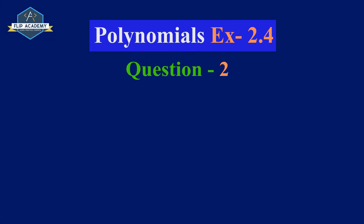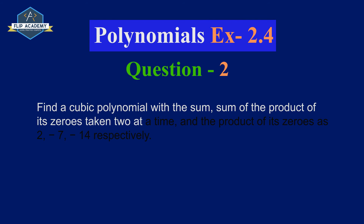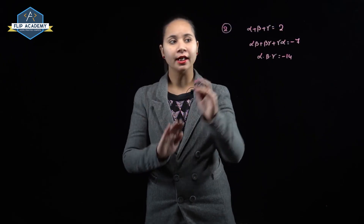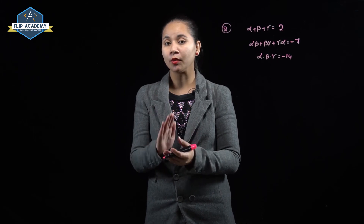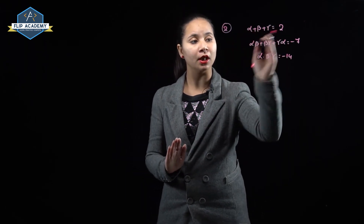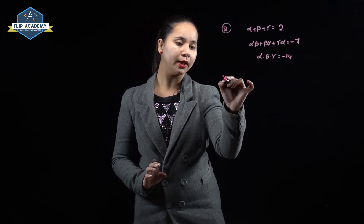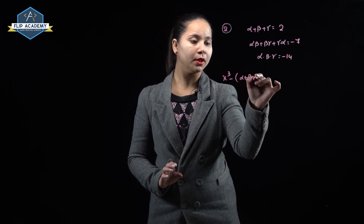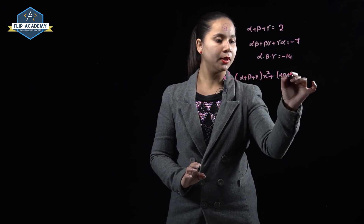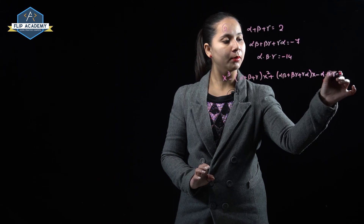Polynomials exercise 2.4, question number 2: Find a cubic polynomial with the sum, sum of the product of its zeros taken two at a time, and the product of its zeros as 2, -7, and -14 respectively. So α + β + γ = 2, αβ + βγ + γα = -7, and αβγ = -14. The formula is: x³ - (α+β+γ)x² + (αβ+βγ+γα)x - αβγ = 0.